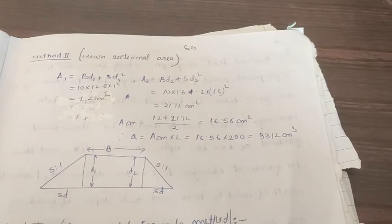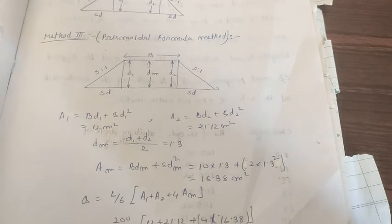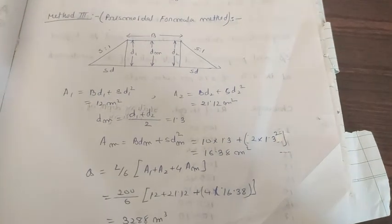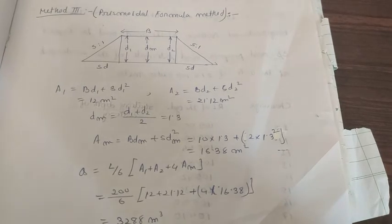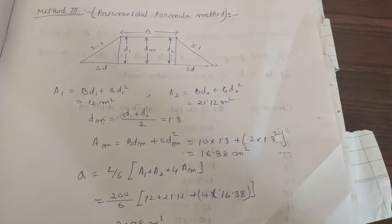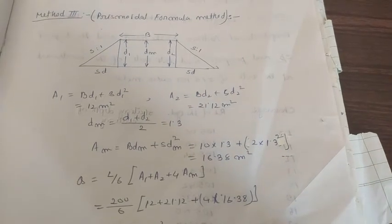As we all know, Q = A × L, that is area into length. Length 200 is already given, so this is your answer. If you want to do prismoidal method, this was the prismoidal formula where a1 and a2 you have to find out.